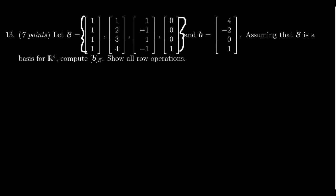We're given a basis for R4, a non-standard basis. It contains four vectors: [1,1,1,1], [1,2,3,4], [1,-1,1,-1], and [0,0,0,1]. You don't need to prove this as a basis. You can just assume it's a basis. And we have a vector b = [4,-2,0,1]. We need to compute the coordinate vector of b.